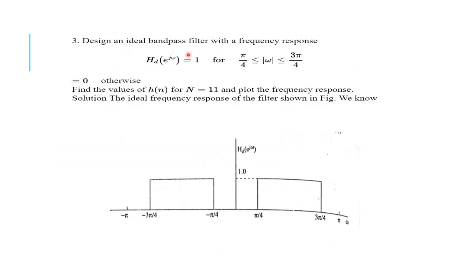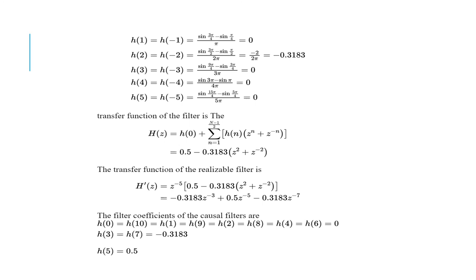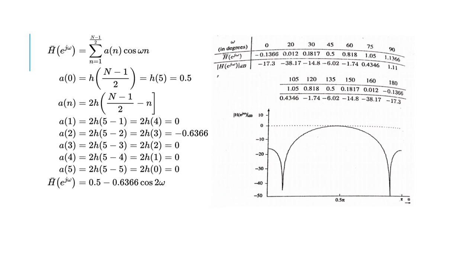The next problem is an ideal band pass filter — very important from an examination standpoint. Band pass means for a particular band of frequencies it allows, and for the rest it suppresses. The given limits define the pass band; draw and understand the graph accordingly. The idea can be split according to the limits given, following the same procedure as for the low pass and high pass filters. With N = 11 samples, find H(n) = HD(n), compute h(0) and all h(n) values, find H(z), obtain the realizable filter, then find the frequency response. This is how we design FIR filters using the Fourier series method.